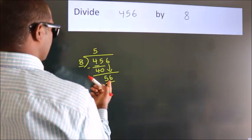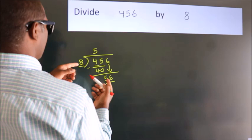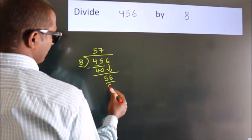When do we get 56? In the 8 table. 8 sevenths, 56.